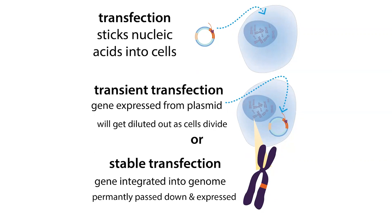Instead of using antibiotics to select for cells that took in a plasmid, we typically just add a large amount of plasmid so that all or most cells will take it in. We can use screening markers like co-expressed GFP to confirm transfection, but we're not adding antibiotics for selection since that plasmid will get diluted out over time anyway.